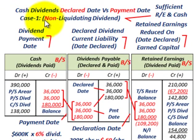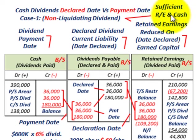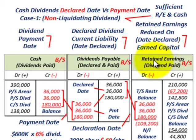Let's look at Case 1 — this is the non-liquidating dividend. We're going to be looking at the cash dividends at the declared date versus the payment date. When we're looking at our non-liquidating dividends, what we mean is we've got sufficient retained earnings and cash to pay those dividends. What's involved? We're going to have a cash account, we're going to set up a dividends payable as a liability account, and it's going to involve our retained earnings.